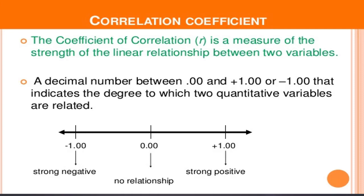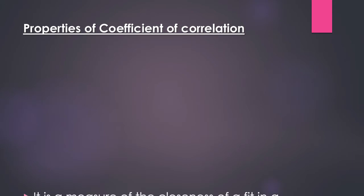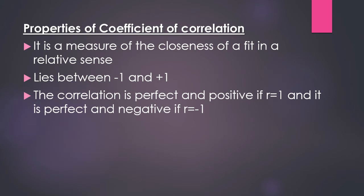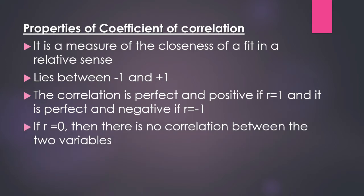The correlation coefficient is a measure of closeness of fit in a relative sense, and it lies between minus one and plus one. The correlation is perfect and positive if r equals plus one, and perfect and negative if r equals minus one. If r equals zero, there is no correlation between the two variables and they are said to be independent.